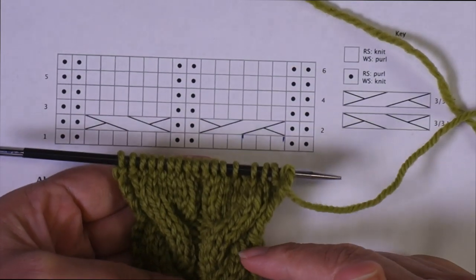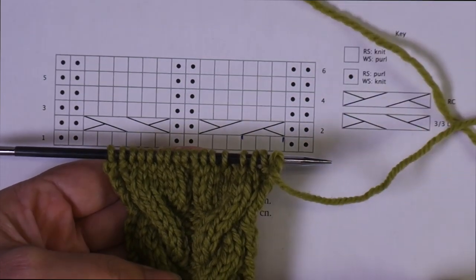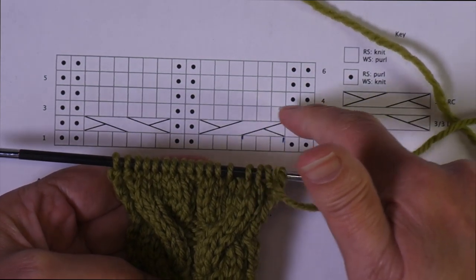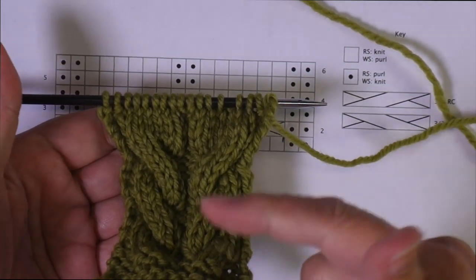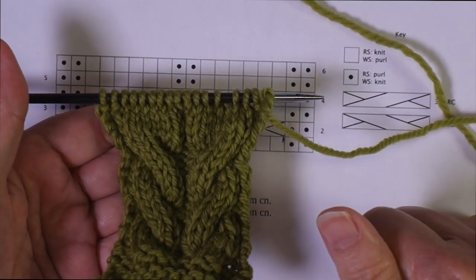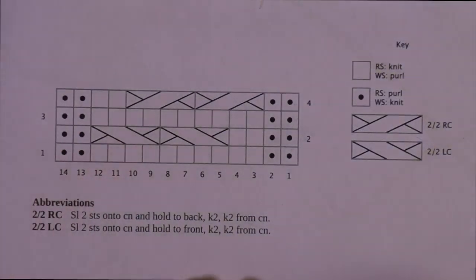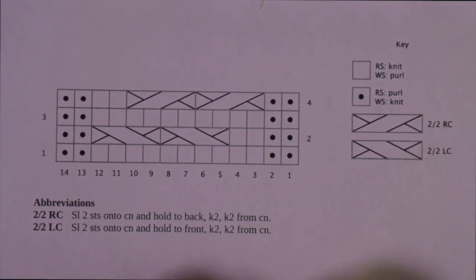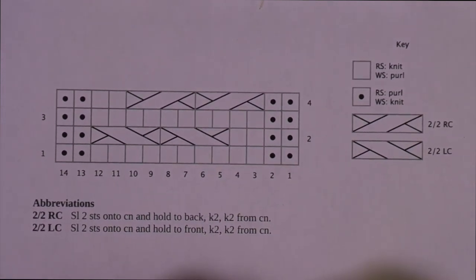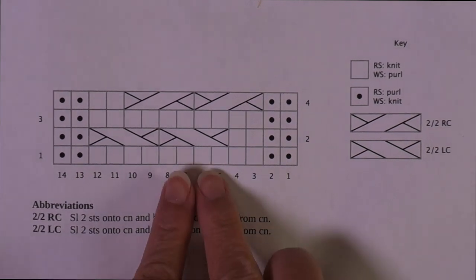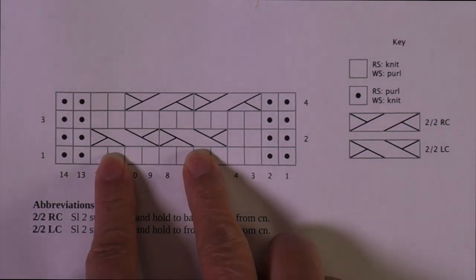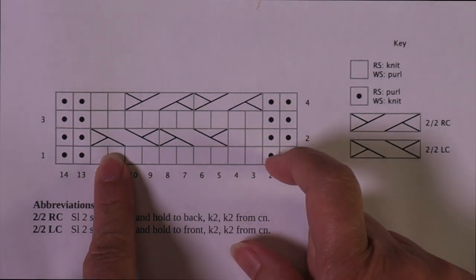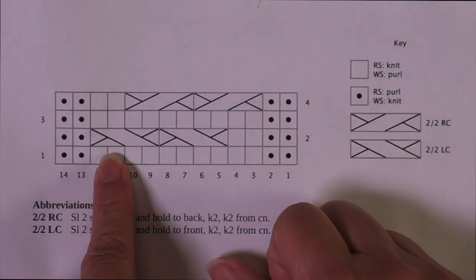For this rope cable, the whole repeat was six rows long and there was one crossing every six rows — only one crossing per repeat. Not all cables contain only one crossing per repeat. In fact, sometimes they include multiple crossings in a crossing row, and they have multiple crossing rows per repeat.